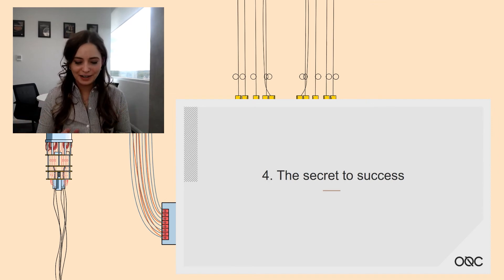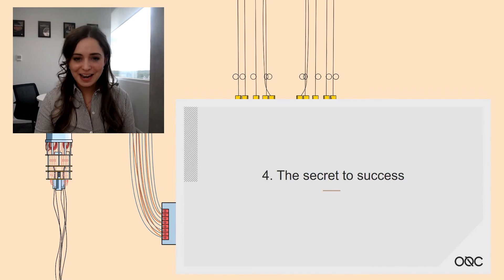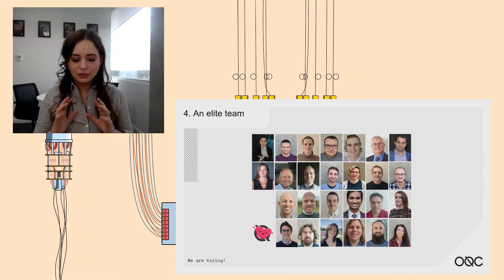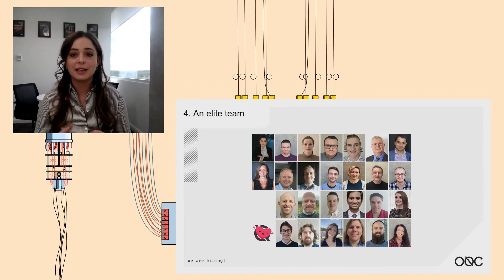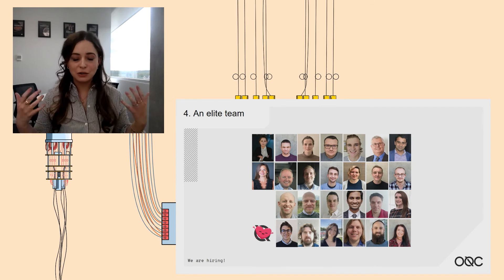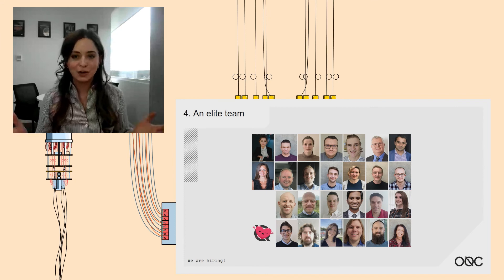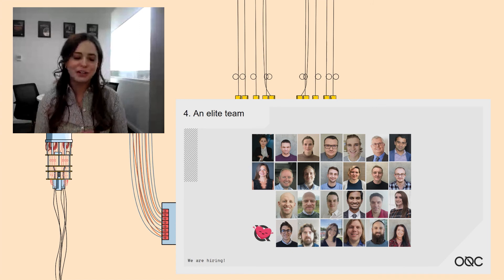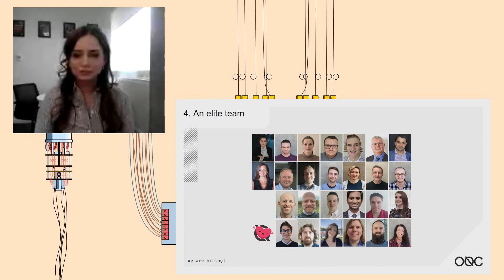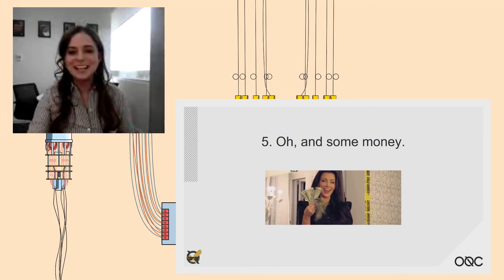Step four — the secret to success — is an elite team. We could have the most incredible world-class technology in the world but none of this would be possible without an incredible team of world-class technical, commercial, and industrial experts. Today at OQC we're a team of around 26 people but growing week by week. We have 12 roles live on our website, from FPGA and RF engineer roles to software engineer roles, executive assistants and office assistants — and if you're interested, we would love to hear from you.